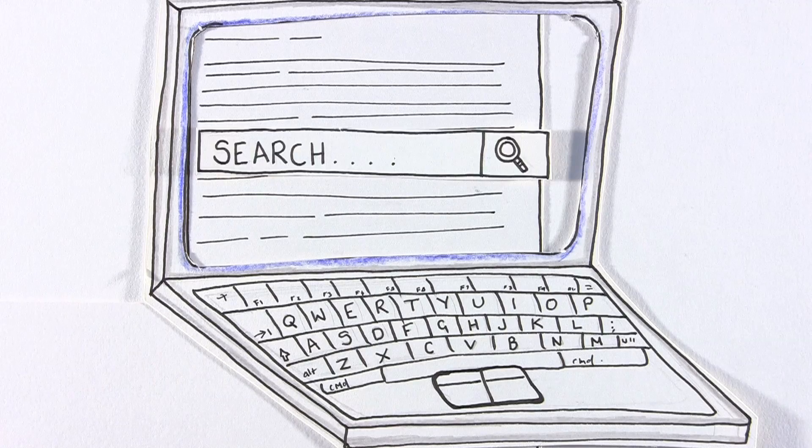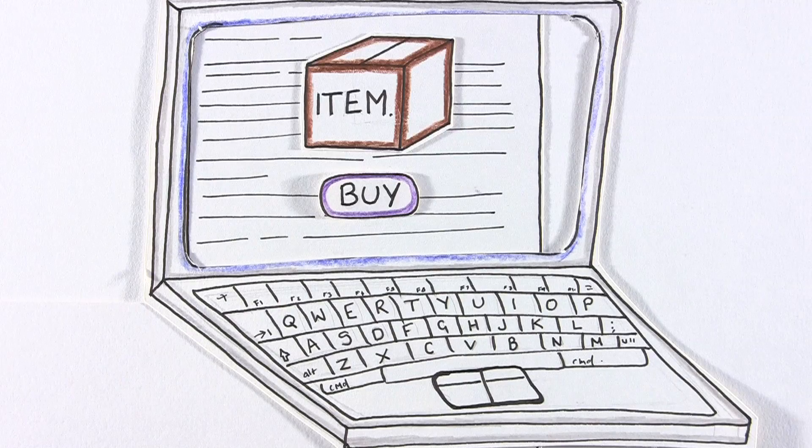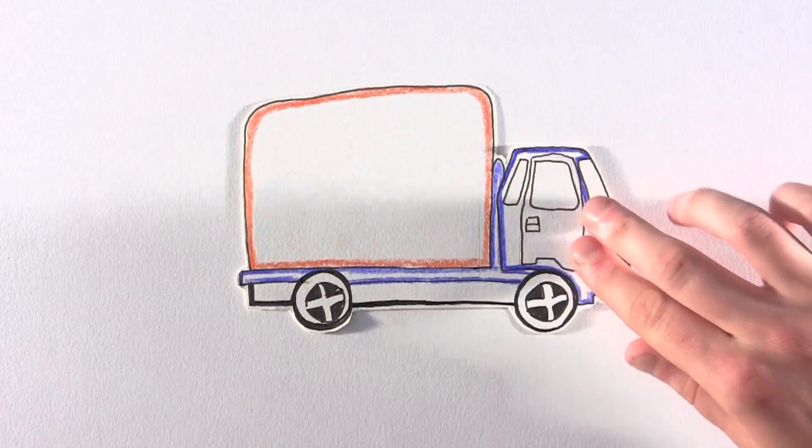You log on. You find out what you want to buy. You buy your item, and your item is delivered. This is now the norm.